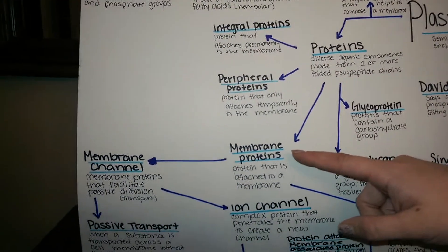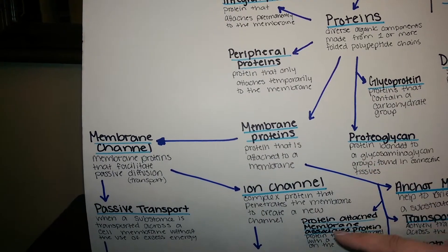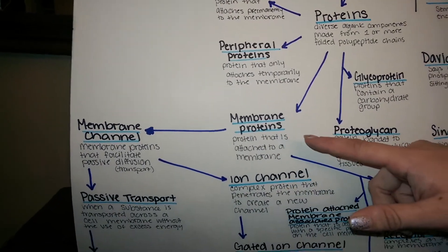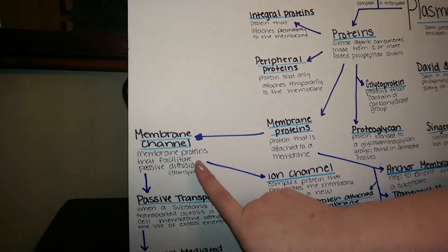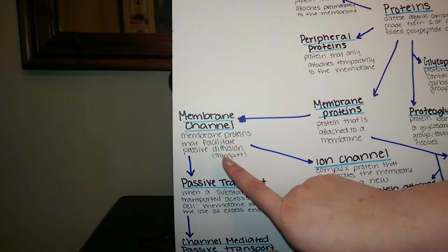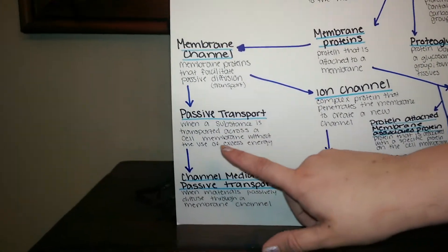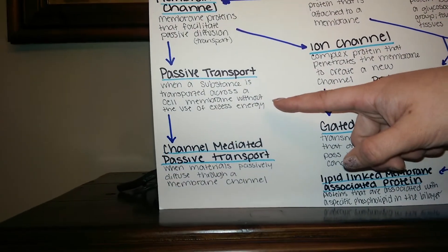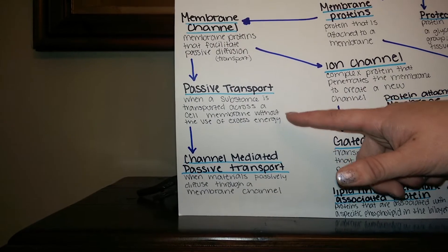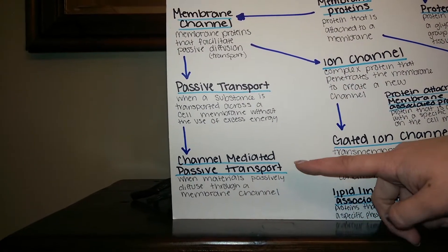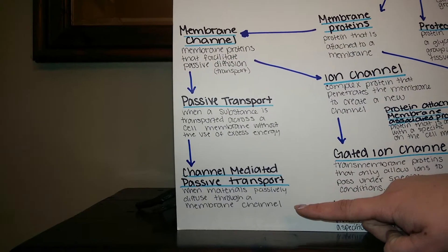Proteins also can create membrane proteins, which are proteins that are attached to a membrane. These are divided up into more groups. They can create membrane channels, which facilitate passive transport — passive transport being when a substance is transported across a cell membrane without the use of excess energy. Through that, passive transport can create channel-mediated passive transport, which is when materials passively diffuse through a membrane channel.